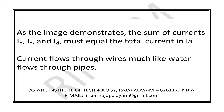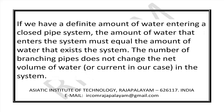Current flows through wire much like water flows through pipes. If we have a definite amount of water entering a closed pipe system, the amount of water that enters the system must equal the amount of water that exits the system. The number of branching pipes does not change the net volume of water, or current in our case.